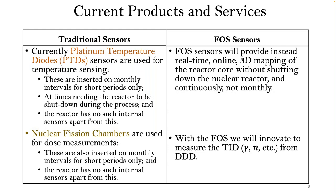Currently, you've got platinum temperature diodes as one of the sensors being used for temperature sensing, normally inserted on monthly intervals over a short period. At times, the reactor needs to be shut down during the measurement process. The reactor has no permanent internal sensors apart from this — so you don't have permanent sensors that can continuously provide operators with data, which is quite fairly not the best way to operate.